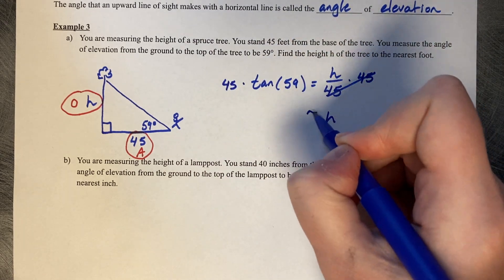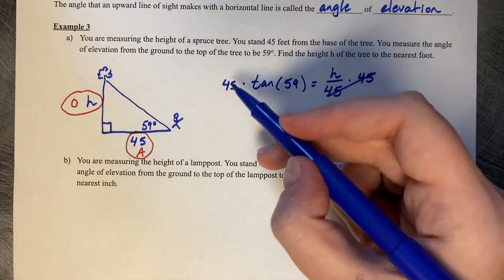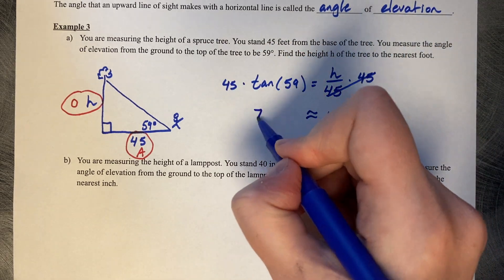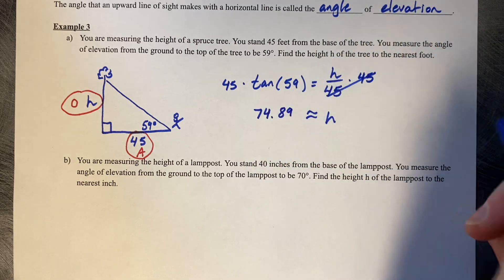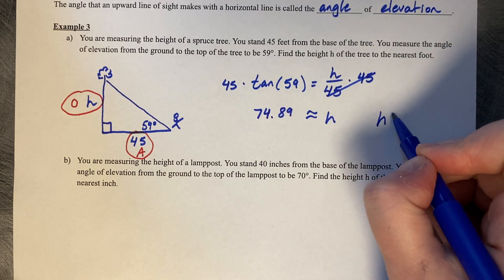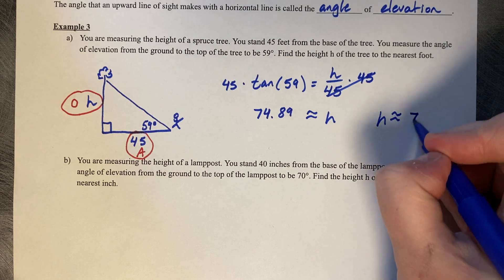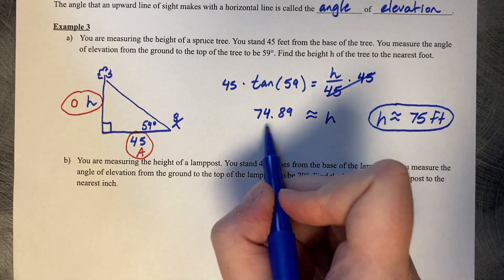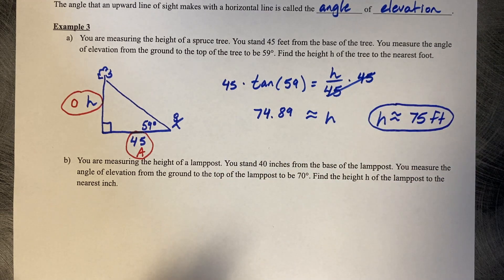So h is approximately, when we type that into the calculator, 45 times the tangent of 59 is 74.89, but it said round it to the nearest foot. So the height is approximately 75 feet, because the 4 rounds up to a 5.